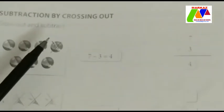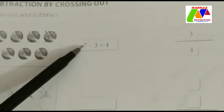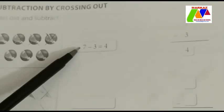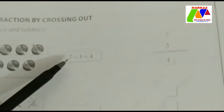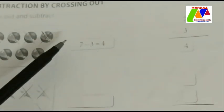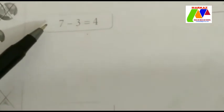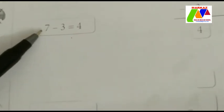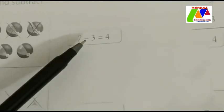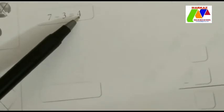Children, always in subtraction you have to keep in mind the biggest number. In addition, any numbers — bigger number or smaller number — can come first. But in subtraction, only the bigger number comes first. 7 is the bigger number and 3 is the smaller number. So 7 minus 3 is equal to 4. All of you clear?